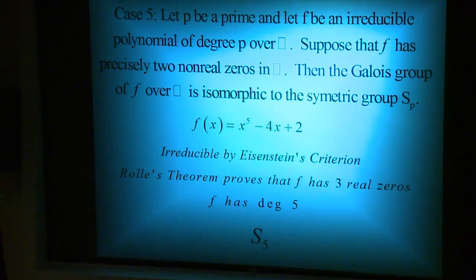Now the last instance states: Let P be a prime, and let F be an irreducible polynomial of degree P over the rationals. Suppose that F has precisely two non-real zeros in the complex numbers. Then the Galois group of F over the rationals is isomorphic to the symmetric group SP. Isomorphic means it's one-to-one, it's onto, and it also has the same structure as SP.